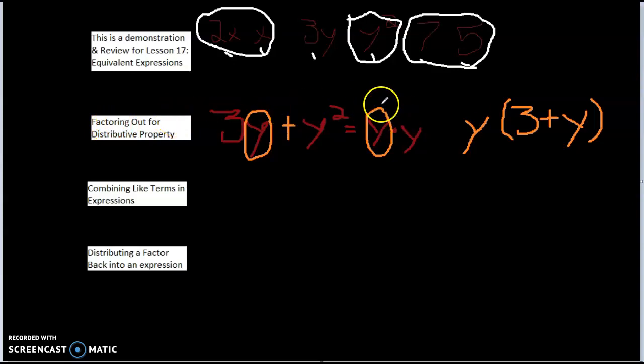Factor out. Think about factors. Factors are the values that the numbers can be divided by. Both 3y and y squared can be divided by y. Both of them can take out a y and be totally fine. If I wanted to put this back in, well, you're going to see that down here in a minute.